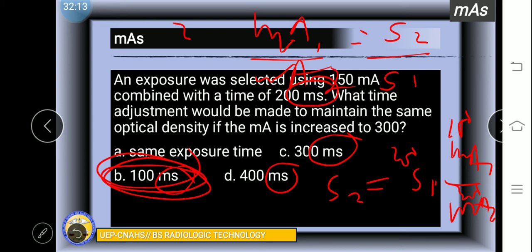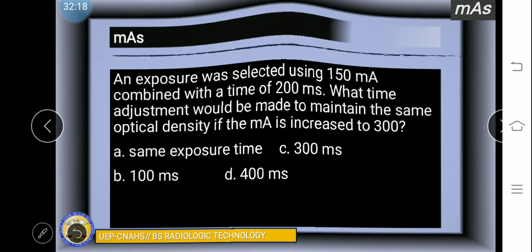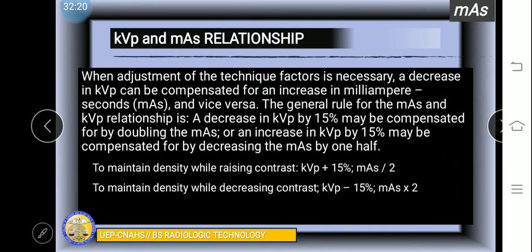If you have questions, do not hesitate. Let's move on. Now let's come to KVP and mAs relationship. When adjustment of the technique factors is necessary, a decrease in KVP must be compensated for an increase in milliampere second and vice versa.